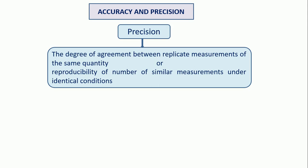For example, the expected value is 10 ml in volumetric analysis. But after many titrations, we got reading 8 ml. After 4 titrations, again the same reading 8 ml is observed. That means that is a precision — it is not the accurate value, but it is a precise value. That is the degree of agreement between replicate measurements. When we do a number of measurements, every time we got the same reading, the same answer — that is known as precision, also called reproducibility of similar measurements under identical conditions.